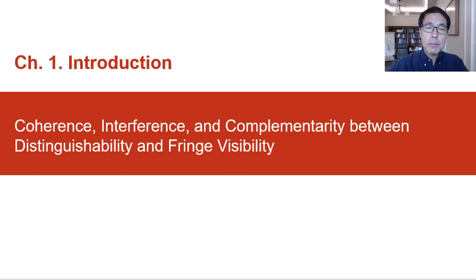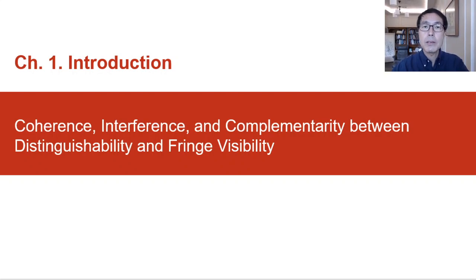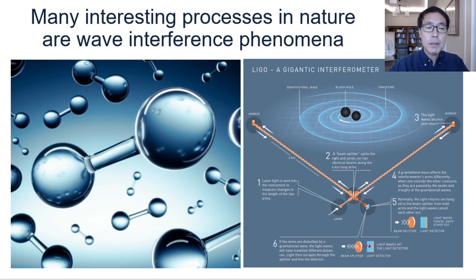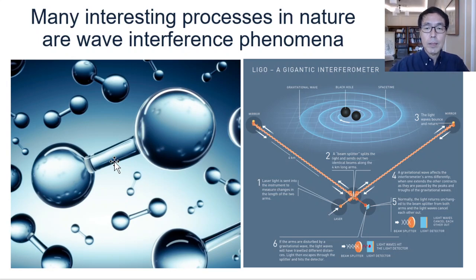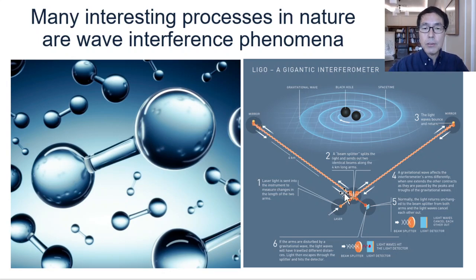Let me start with a brief introduction to coherence and interference phenomena. When two or more coherent waves are added together in space and time, they interfere constructively or destructively depending on the relative phases of the two waves. A number of interesting processes in nature involve wave interference. On a microscopic scale, a chemical bond is an excellent example showing the importance of interference between electronic wave functions. On a cosmic scale, the gravitational wave is a well-known example, detected using a gigantic interferometer with many kilometers-long arms.